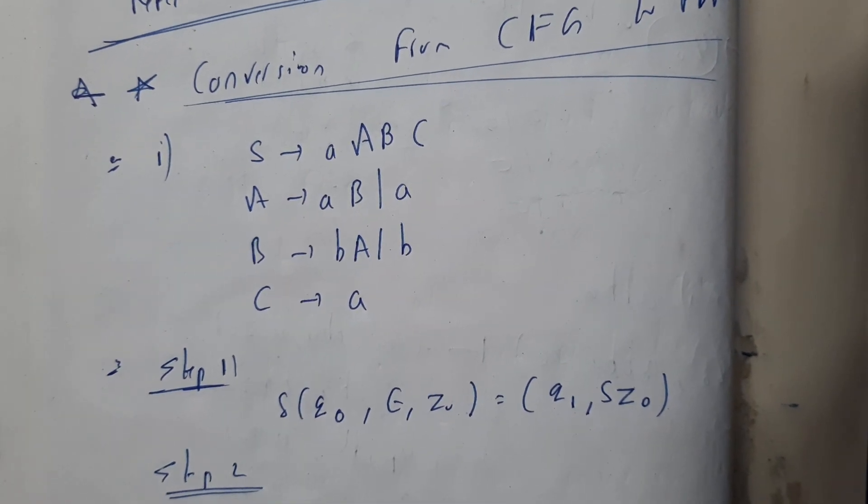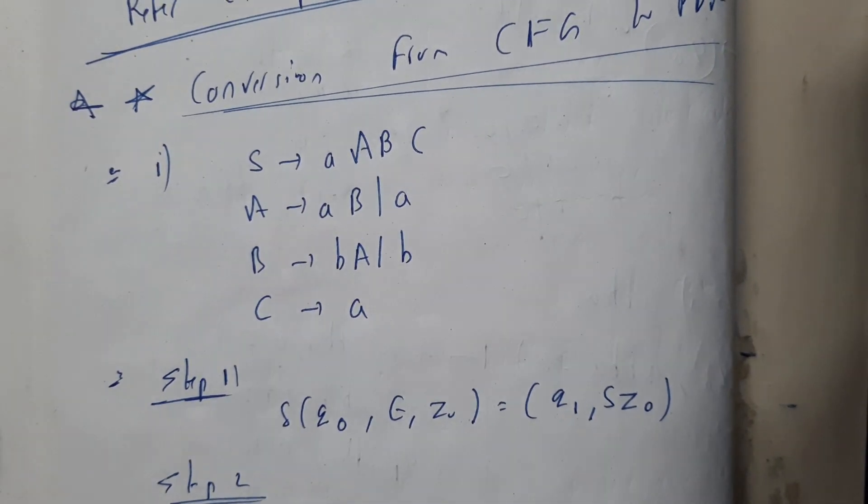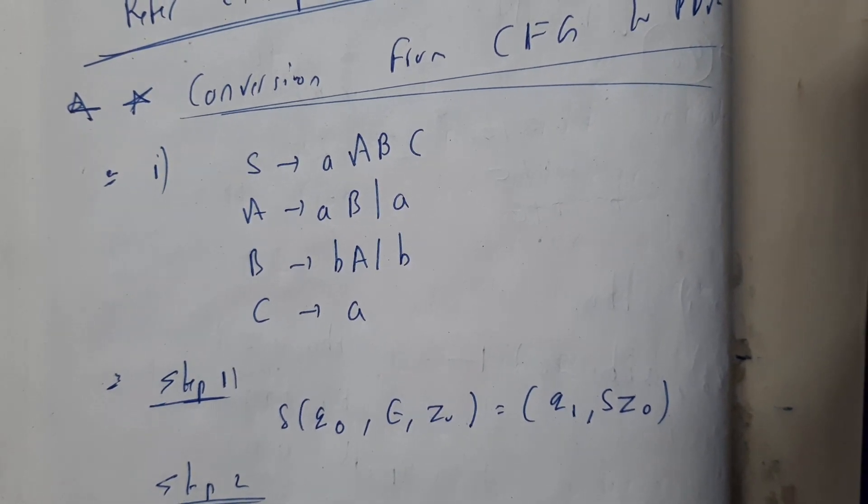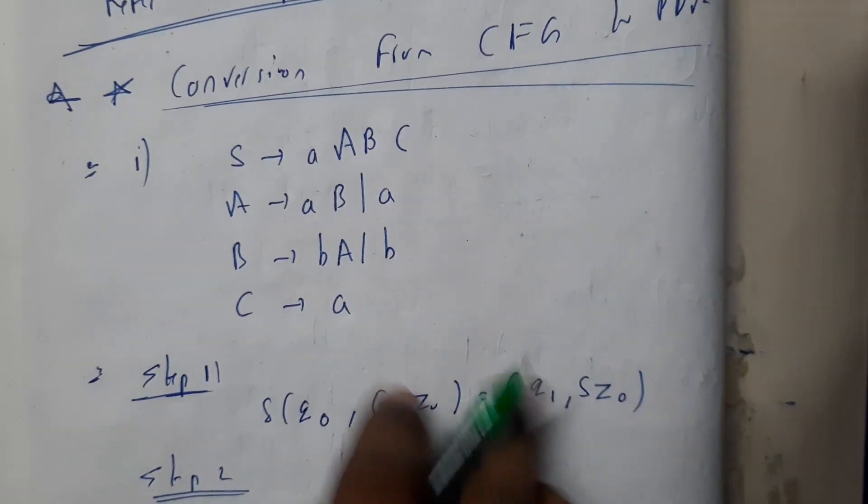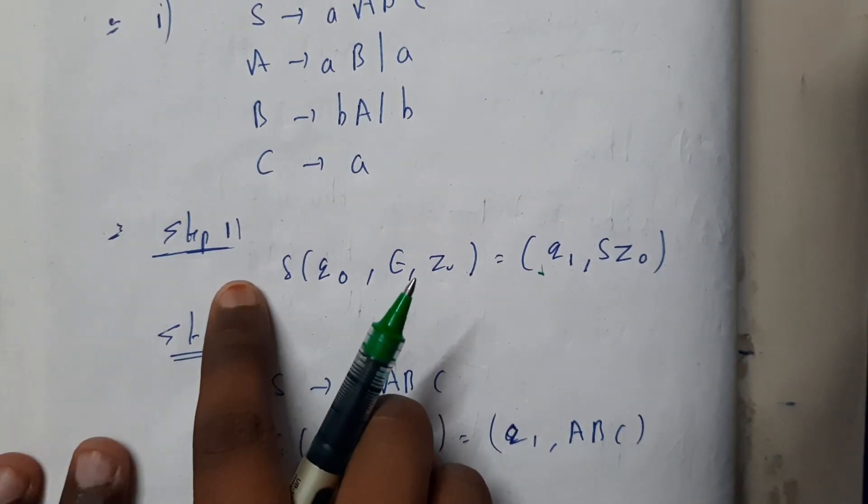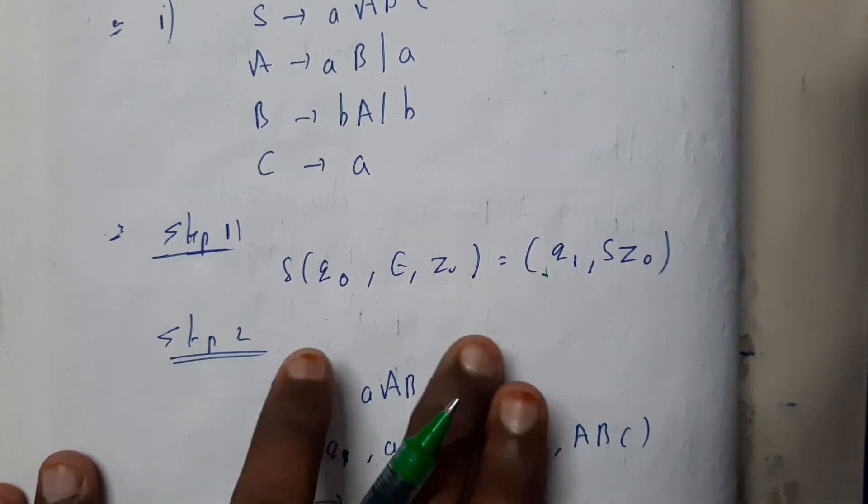Okay, so here the grammar is absolutely in GNF, so we can start our first step. Remember that the first step is always with respect to epsilon. We will be going through some random state S.